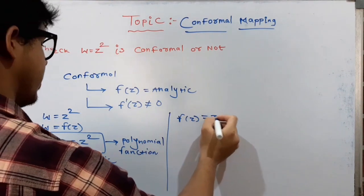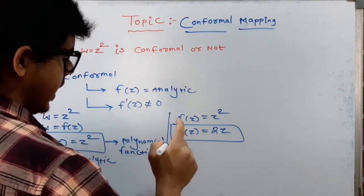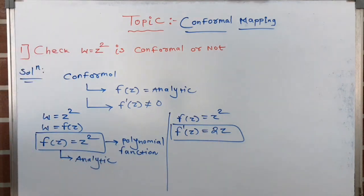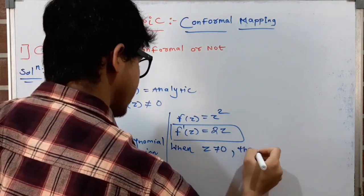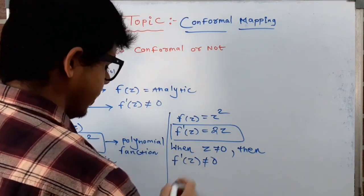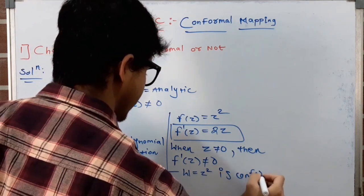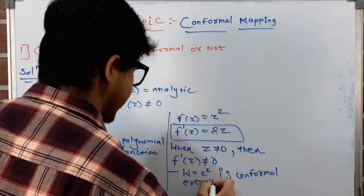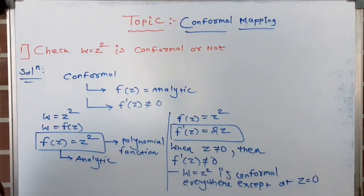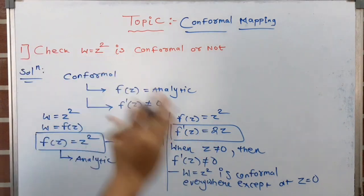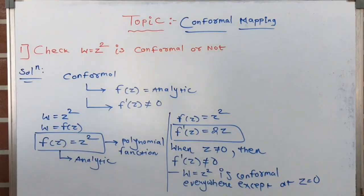Now checking the second condition: f′(z) = 2z. So f′(z)≠0 when z≠0. Therefore w=z² is conformal everywhere except at z=0. At z=0, the function is not conformal; at all other points where z≠0, the mapping is conformal.